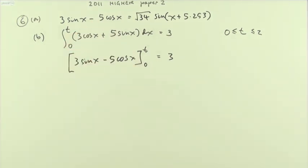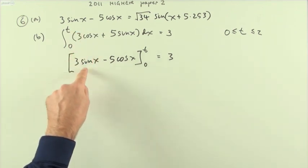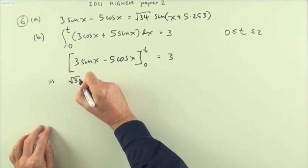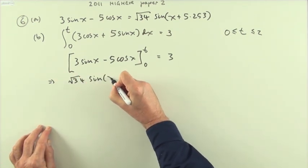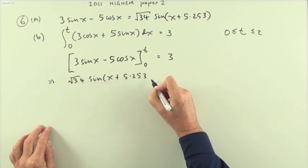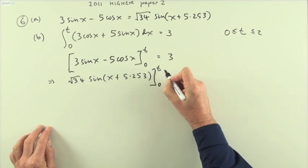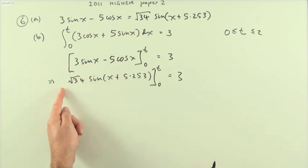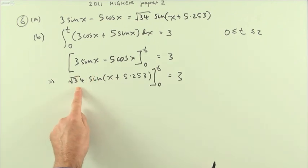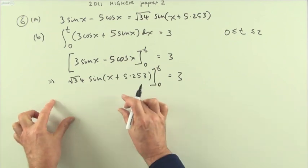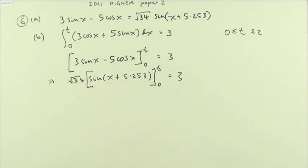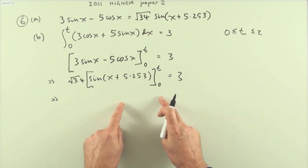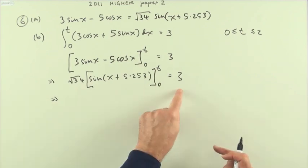You can see the integrated expression matches the first part, so replace it with the wave function result. This gives: root 34 times sine(x + 5.253), evaluated between zero and t, equals three. The root 34 is a common factor of both parts, so take it outside and divide across: the expression evaluated at t minus evaluated at zero equals three over root 34.